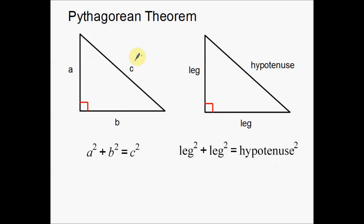The Pythagorean Theorem is usually looked at a couple of different ways. The first way is a normal right triangle with legs of a, leg of b, and then your hypotenuse of c. The equation is written as a squared plus b squared is equal to c squared. That's your very basic Pythagorean Theorem that you're used to seeing.